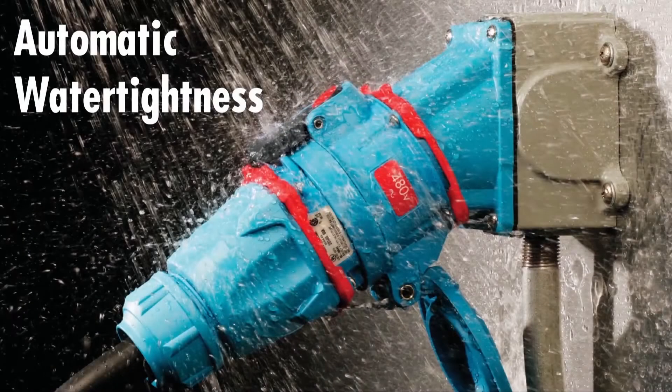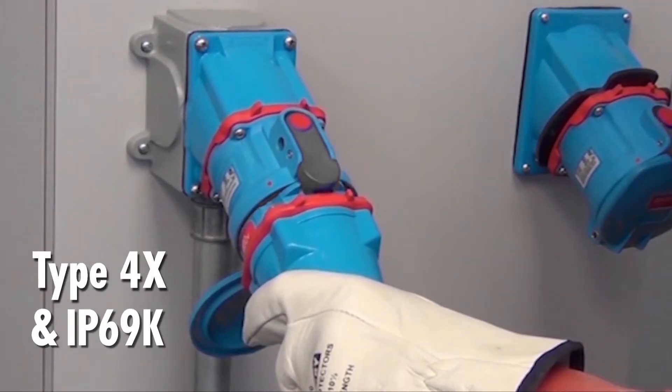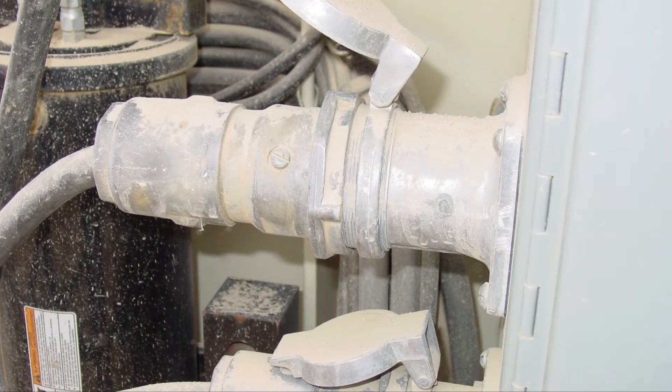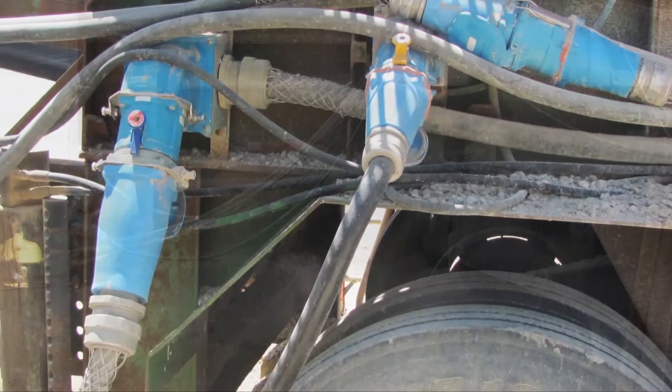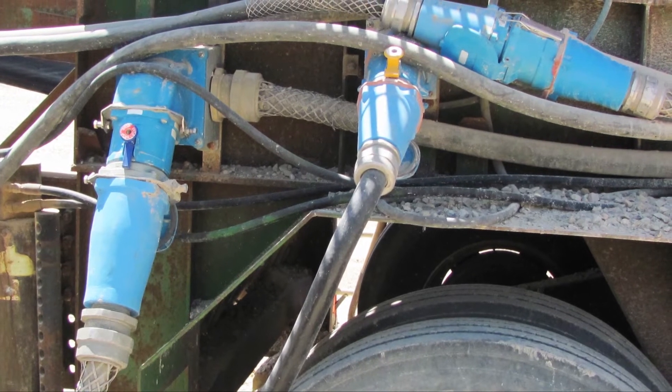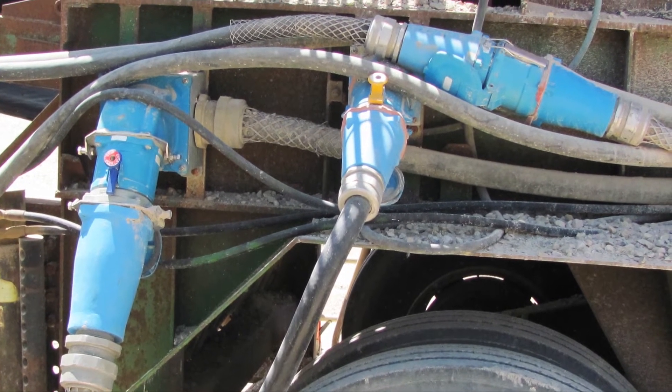Environmental ratings up to type 4X are achieved automatically when the plug is mated to the receptacle. There is no need to tighten an additional ring as required by competitors to achieve rated water and dust protection. Meltrix plug and receptacles feature durable poly or metal housings that withstand rough handling and UV exposure.